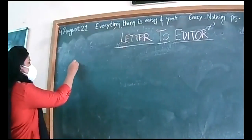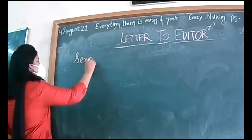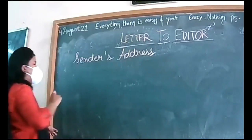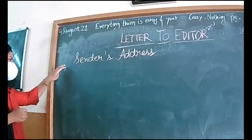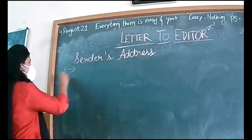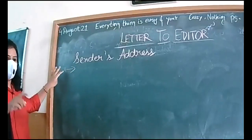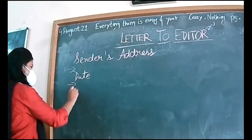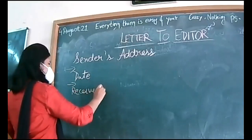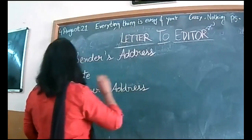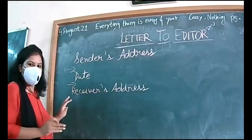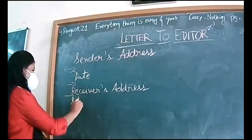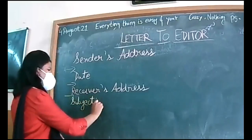With the format: first of all, sender's address — it will be a two to three line address. Then skip one line. Then the date. Again skip one line. Then receiver's address. So prepare yourself for both subjective as well as objective — concentrate on objective most but prepare yourself for subjective also. Then you will skip one line and write the subject, which you will underline.